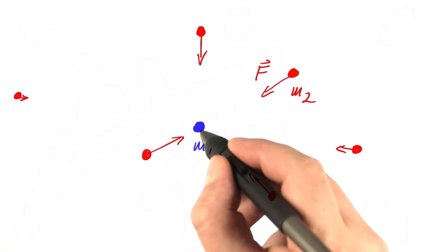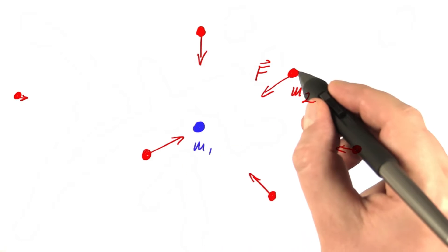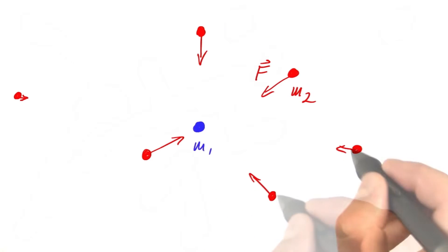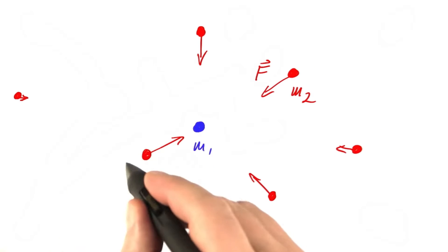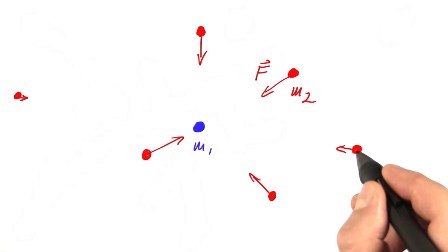If we leave our first mass where it is and move the second mass around, we can determine a force vector at every point in space. We get a force field.